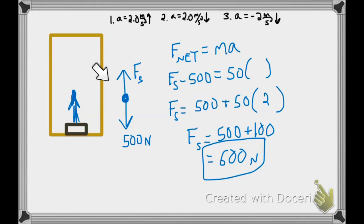This makes sense. Look at the diagram. We have 600 going up, only 500 going down. Of course, we have a net force accelerating the student upward.